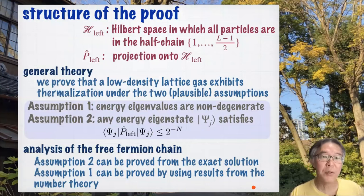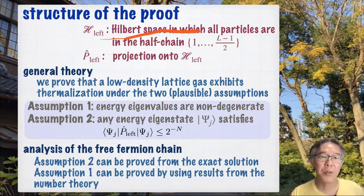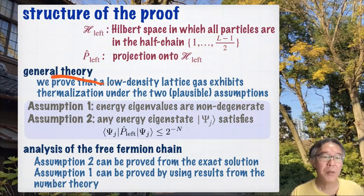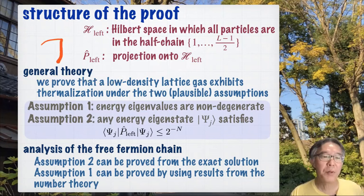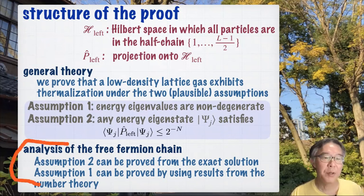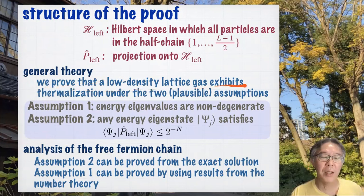Let me tell you the structure of our proof. H_left is the Hilbert space in which all particles are in the half chain, and P_left is the projection onto this sub-Hilbert space. Our proof consists of two parts: a general theory and analysis of the free fermion chain. In the general theory part, we prove that a low-density lattice gas in general exhibits thermalization under the following two very plausible assumptions.